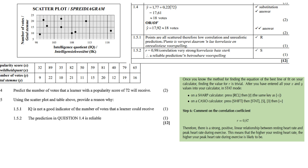1.5.1 using the scatter plot and the table below provides a reason why IQ is not a good indicator of the number of votes that a learner could receive. Well look at the answer points are all scattered. You can see there's no pattern. So therefore there's a low correlation. So there's no negative, there's no positive. Because the points are all, if you look at the sketch, the points are lower. So it's all scattered and that's the indication that it is an unrealistic prediction.